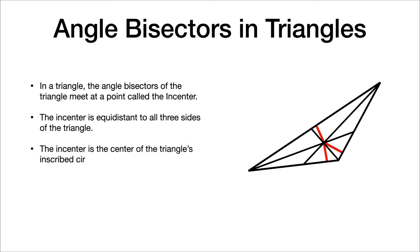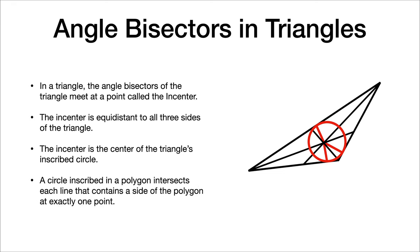The incenter is the center of the triangle's inscribed circle. So circumscribed was outside of the circle. Inscribed is inside of the circle. A circle inscribed in a polygon intersects each line that contains the side of a polygon at exactly one point, meaning it touches it just barely and moves on. Each side it only touches once. It's also kind of a peace sign.